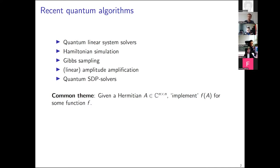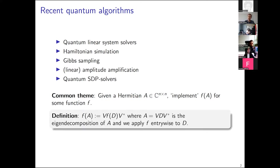All these papers do many different things on top of that, but this is the common theme. I want to discuss what it means to be given a matrix, what implementing a function means, and what functions we care about. For us, functions will act on the spectrum of matrices — whenever I write f(A), I mean a function f from reals to reals applied to the eigenvalues of A.